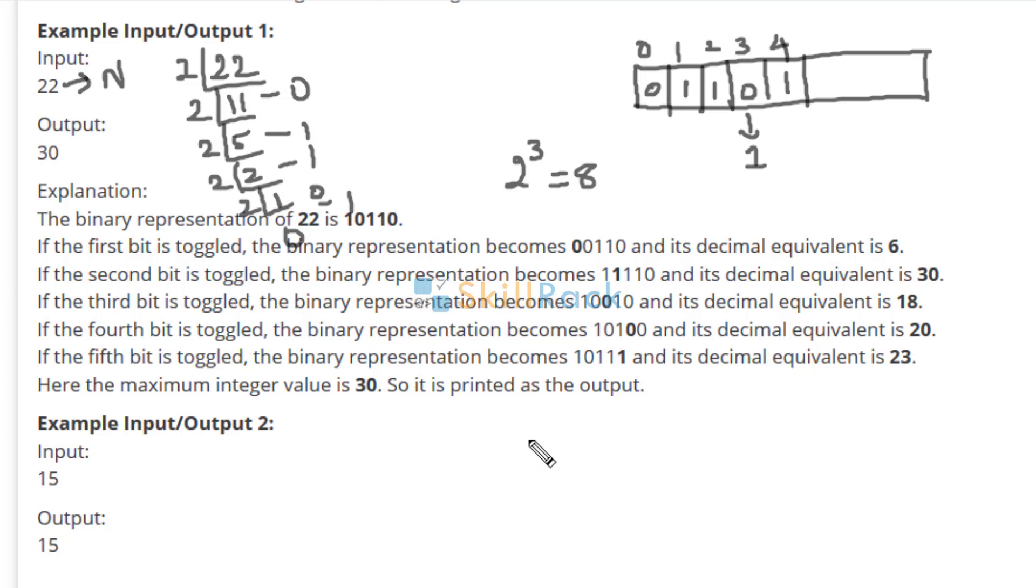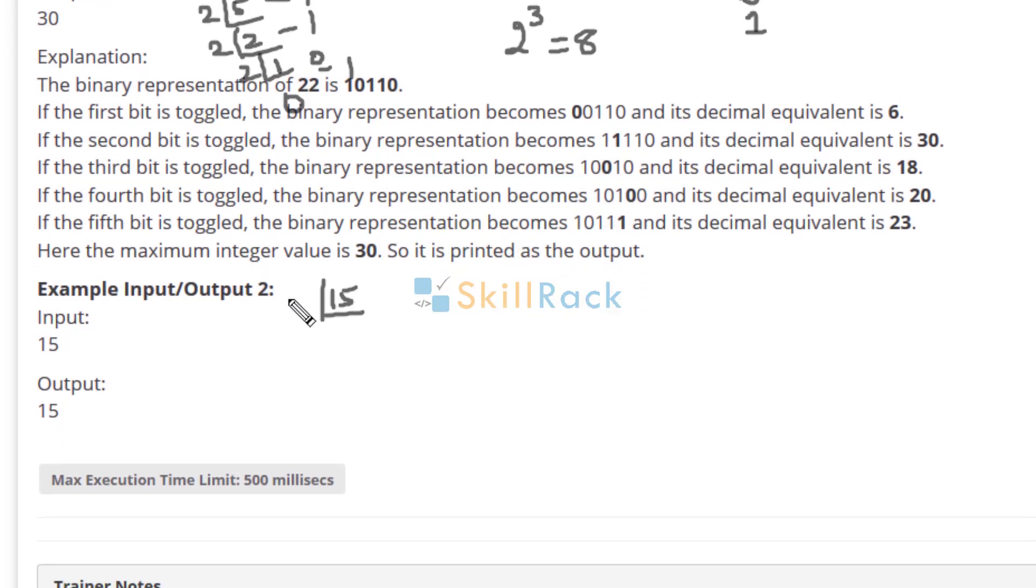Let us look at one more example, 15. When we are dividing by 2, the remainder is 1. So remainder is 1, you get 7, divide by 2, remainder is 1, you get 3, remainder is 1, you get 1 here, and when dividing by 2 you get 1. So 4 ones are going to be there.